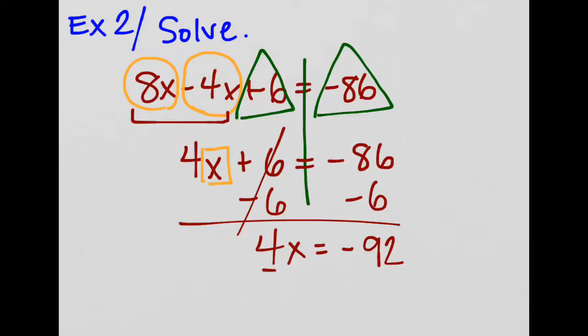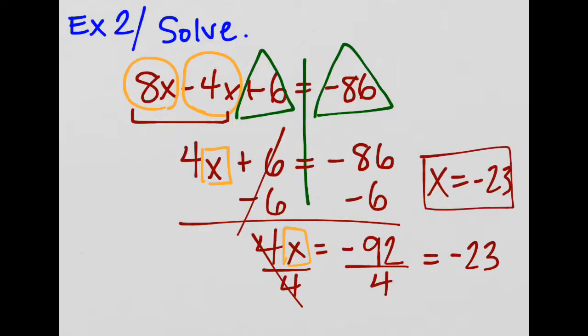That gives us negative 92. Now I can divide by 4 because what's happening to my x is that it's being multiplied. So let's undo multiplication with division. That's going to cancel. And if you work this out, it should equal negative 23. So x is equal to negative 23. Now this isn't very much new information other than we're just combining like terms before we finish solving.